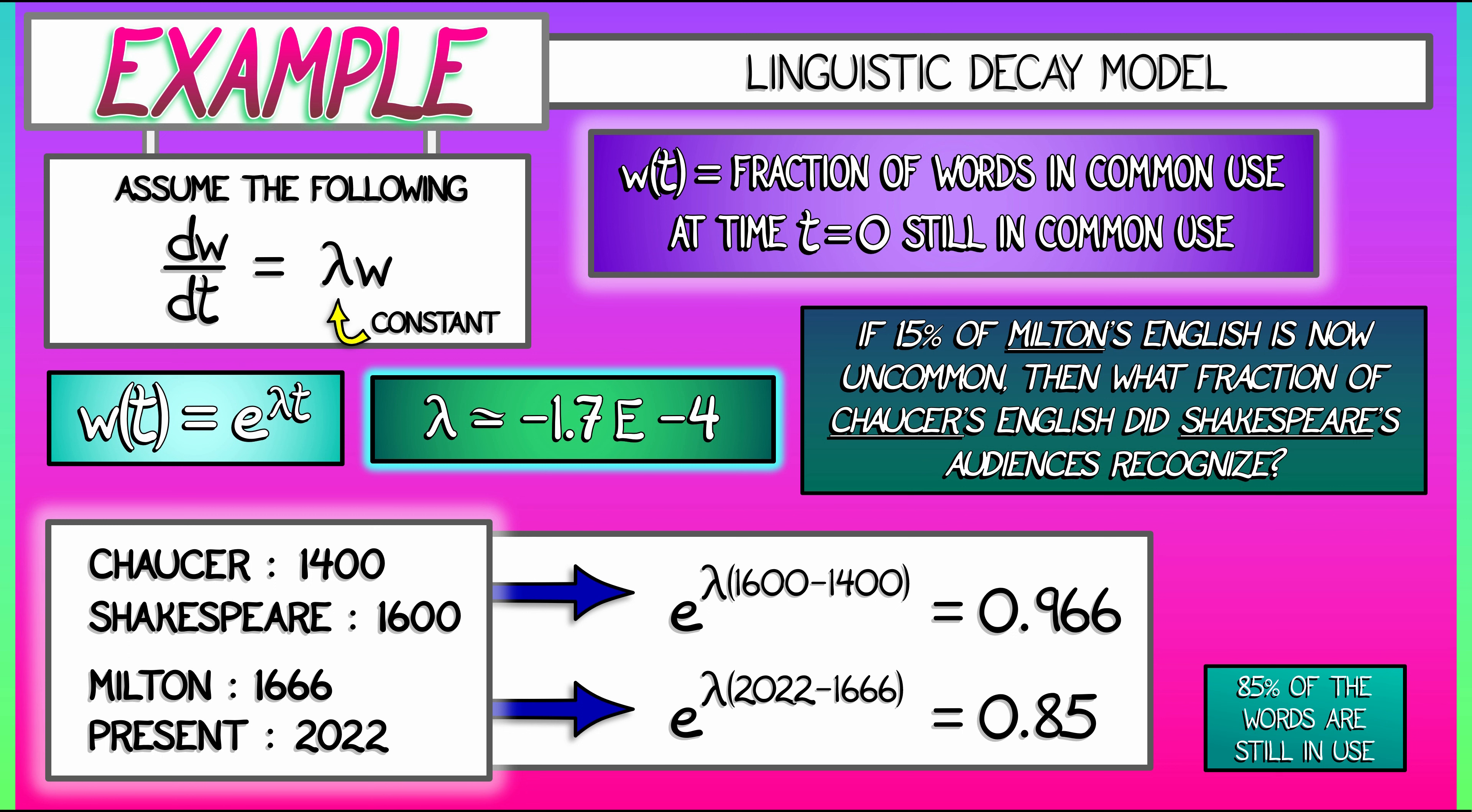What that would mean is, assuming all these hypotheses, that about 3.5% of Chaucer's vocabulary had fallen out of usage by the time Shakespeare's audiences saw his plays. Of course, Shakespeare knew all the words. We're talking about the audiences here.